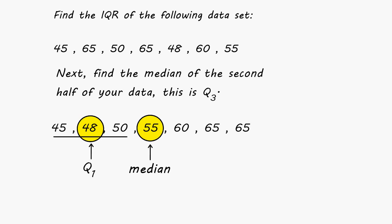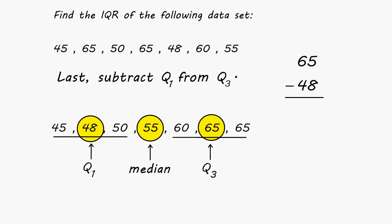After finding Q1, you have to take a look at the second half of your data set — all of the numbers after the median — and figure out what the median is of those three numbers. The median of the second half of your data is called Q3. In this case, that would be 65. Now that we know the values of Q1 and Q3, we figure out the distance between those two points. The difference between those two values is the IQR. After subtracting 48 from 65, we get a difference of 17. So the interquartile range of the given data set is 17.